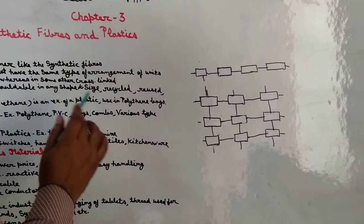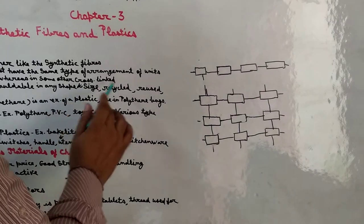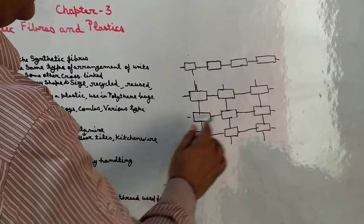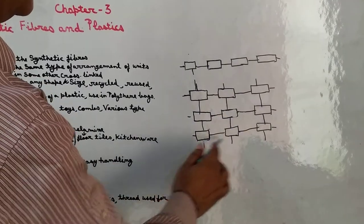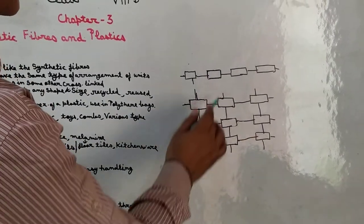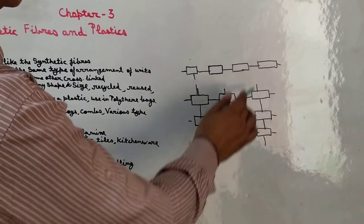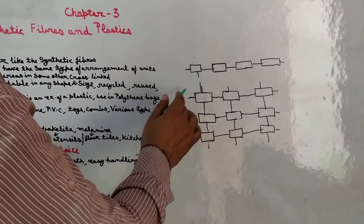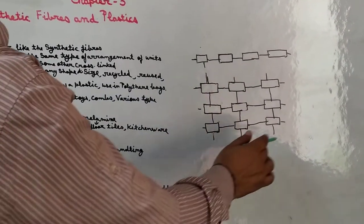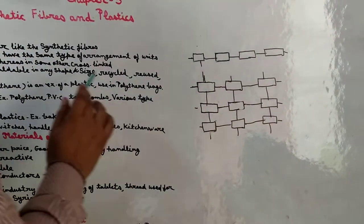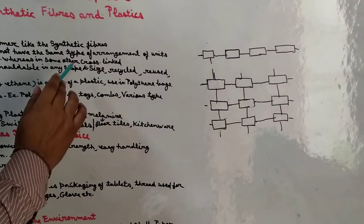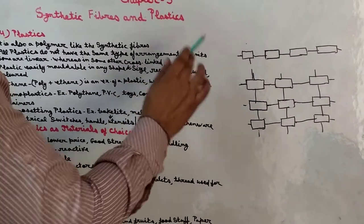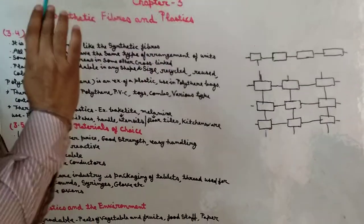Next है cross-link. आप इस diagram में देखेंगे — इसमें पहली lines को दूसरी line काट रही है, intersect कर रही है. तो यह cross type का unit combination हो गया, और इस type के combination को cross-link arrangement of units कहा जाता है.